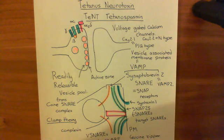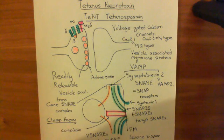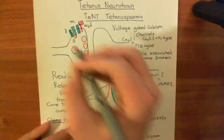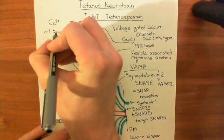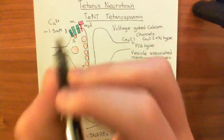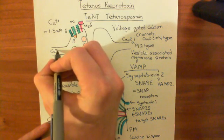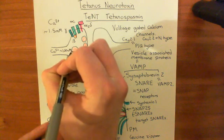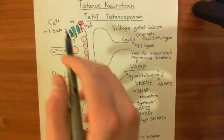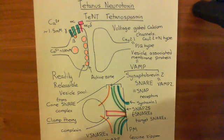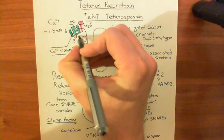When the membrane becomes depolarized because an action potential has arrived, this voltage-gated calcium channel is going to open. Calcium concentration is much higher in the extracellular fluid — around 1.5 millimolar — compared to the intracellular compartment, where calcium is at around 100 nanomolar. That is a big calcium gradient, far bigger than the gradients of sodium and potassium. So when you open this channel, calcium is going to move in through it into the cytoplasm.